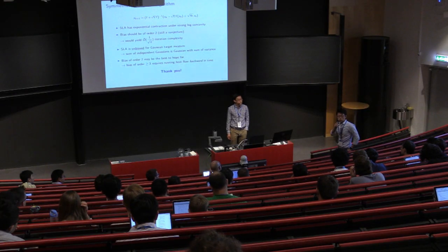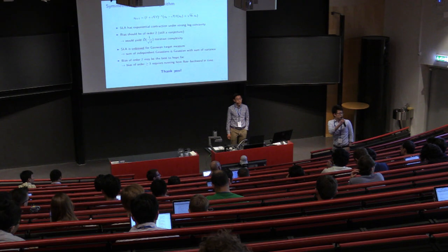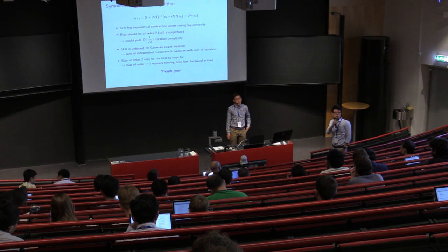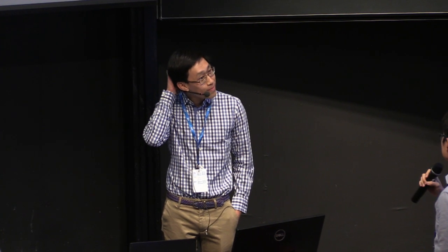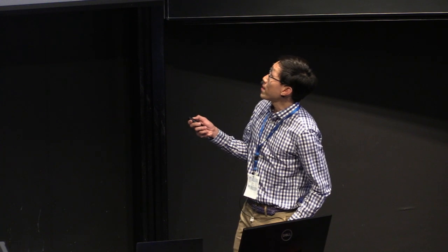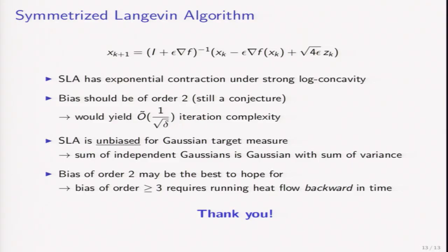We have time for one question. I have a quick question. For this update, if you do implicit updates, do you think there will be any help in terms of reducing the bias? Yes, so this proximal operator is actually doing that implicit update, because you can write this as the argmin of some function value plus a quadratic form. Thank you.